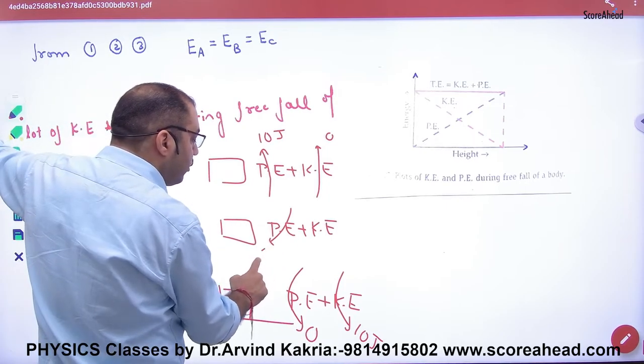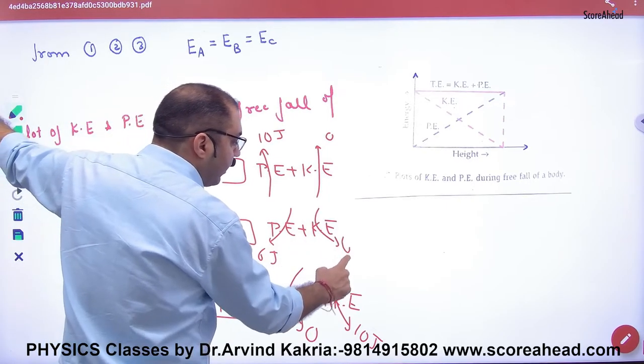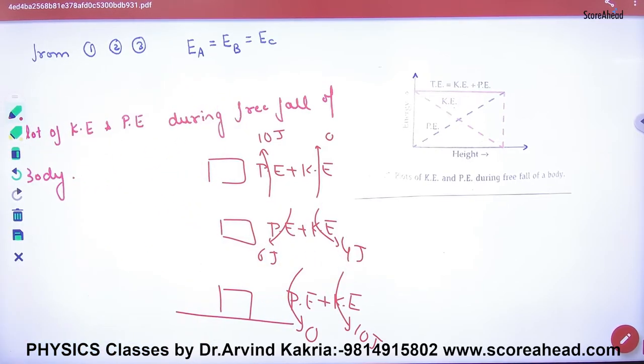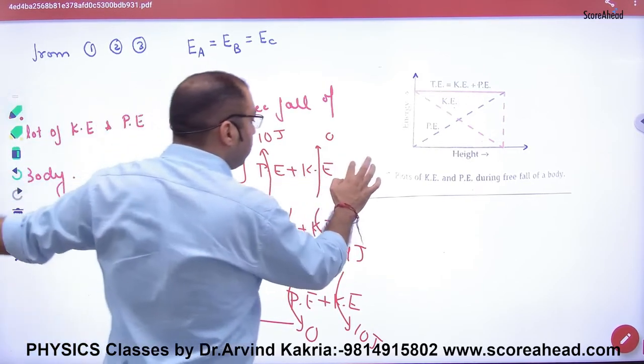In that way, if potential in the path is 6 joules, then kinetic will be 4 joules. Total will remain same.